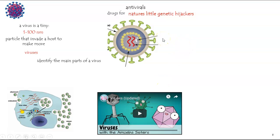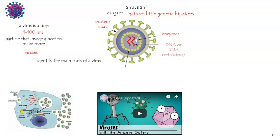Let's identify the main parts of a virus. Viruses can have all sorts of appearances, but looking at one like this: it has a protein coat on the outside, perhaps some enzymes within the capsid container. It always has either some DNA or some RNA. If it has RNA, we call it a retrovirus.